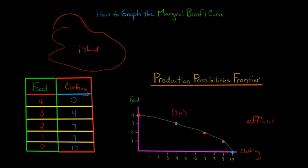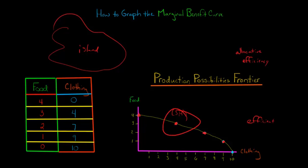The question is, if all the points along the curve are efficient, how do we decide which is the best one? We have all these different combinations — do we want this point, or this point, or this point? We decide by looking at consumers' preferences and what we'll call allocative efficiency. We're talking about production efficiency when we're talking about the PPF — every point along the PPF is efficient in production.